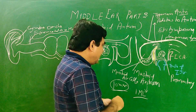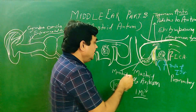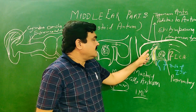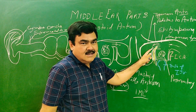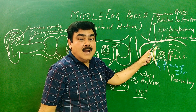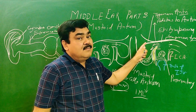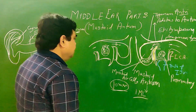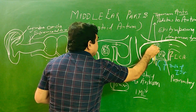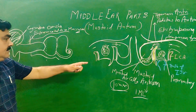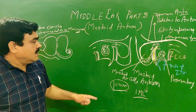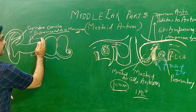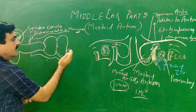The posterior part is related to the sigmoid sinus, and the medial part is related to the lateral semicircular canal and also the posterior semicircular canal. There is a prominence of the lateral semicircular canal on the medial side.